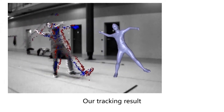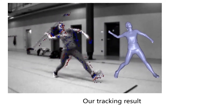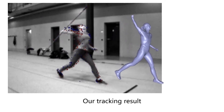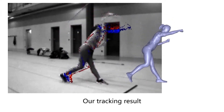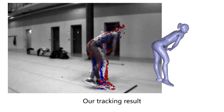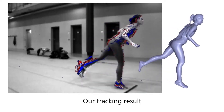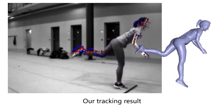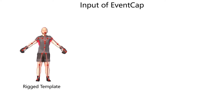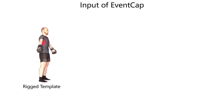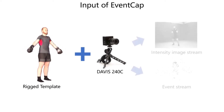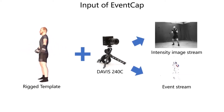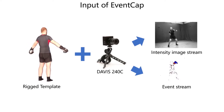Our method can capture high-speed human motion at a temporal resolution of 1000 frames per second. Our method relies on a scanned template model of the actor, as well as the hybrid input from the event camera, including a low frame rate intensity image stream and an event stream of extremely high temporal resolution.